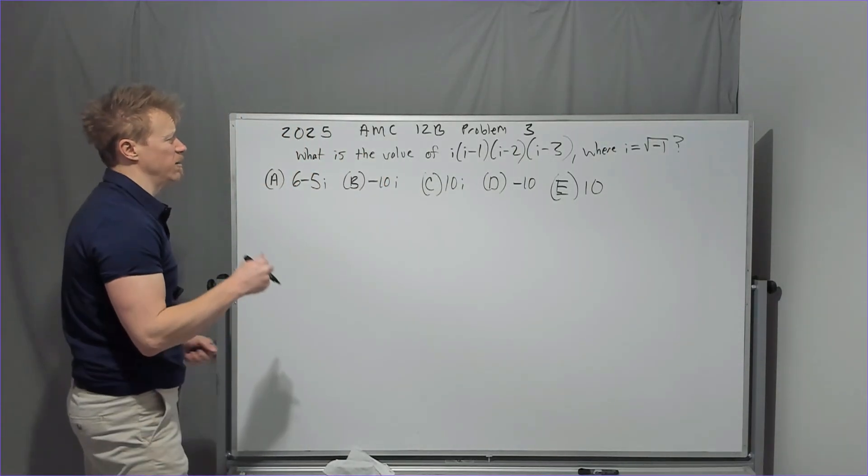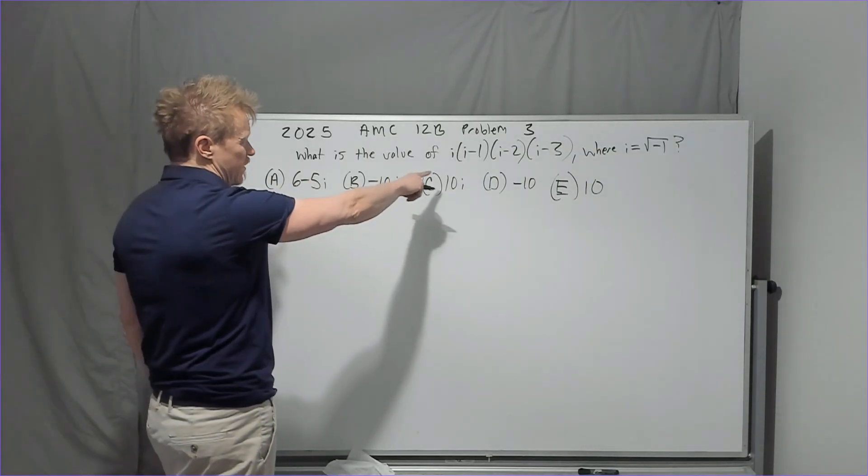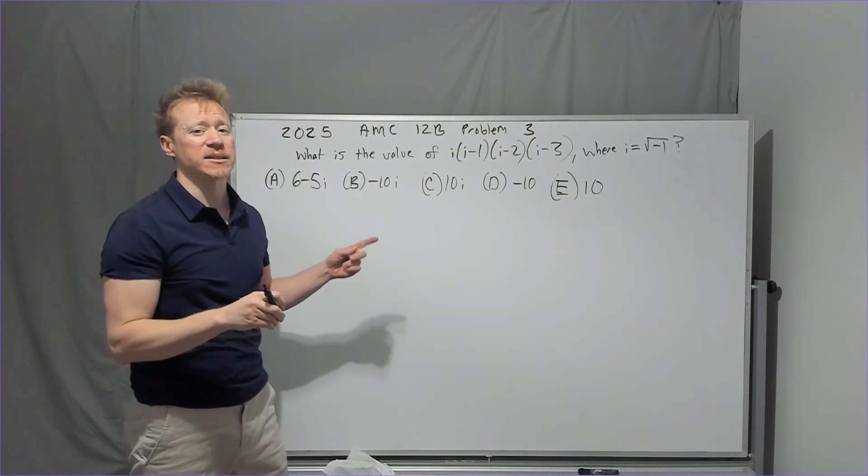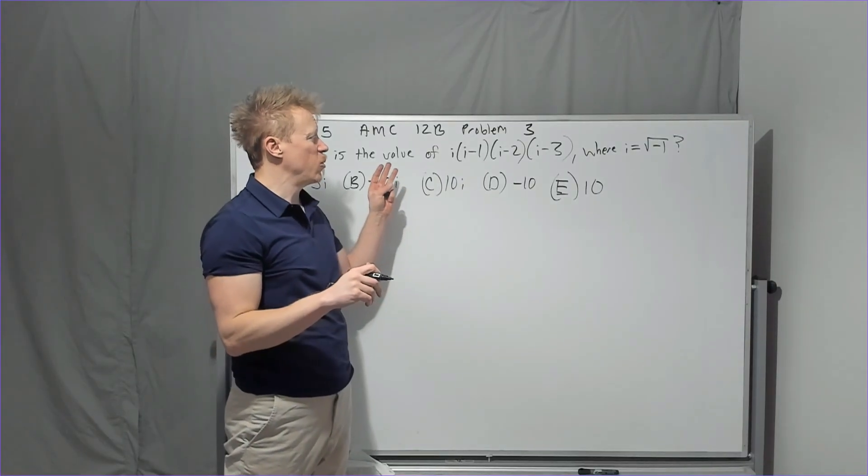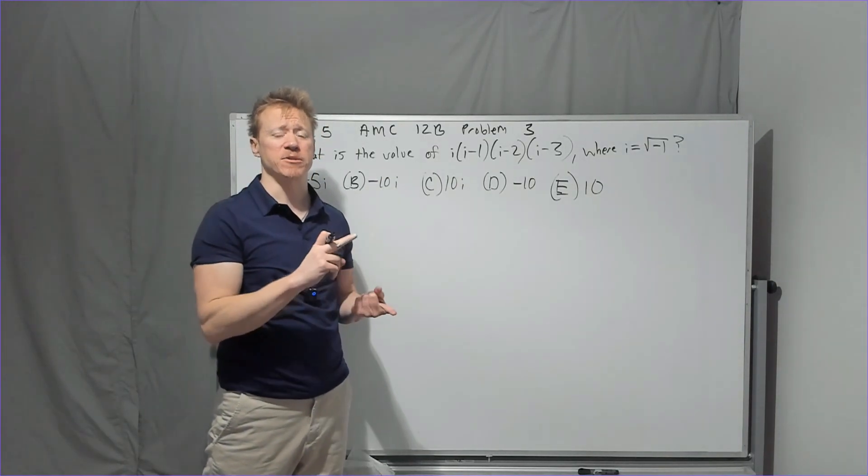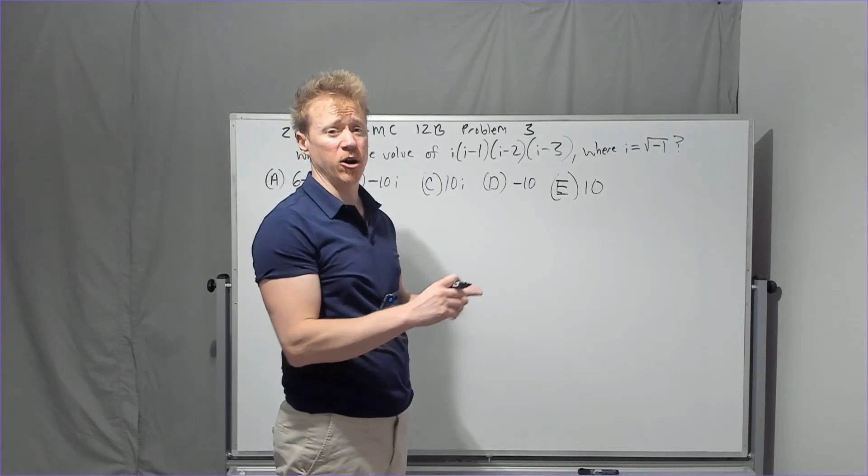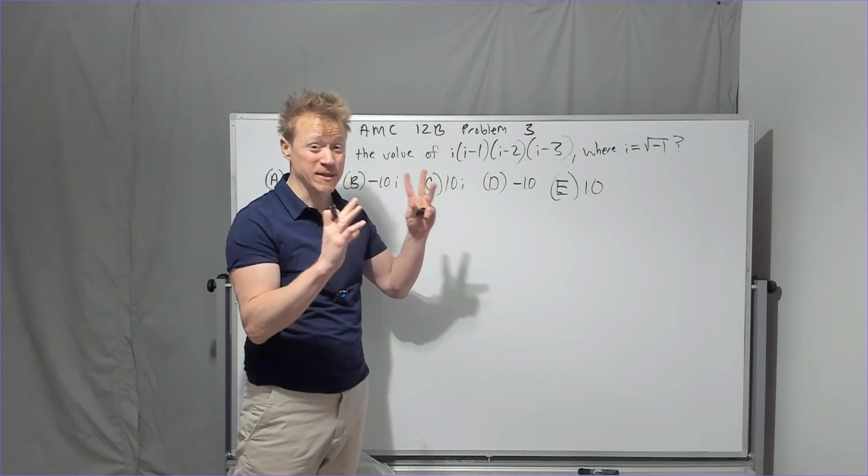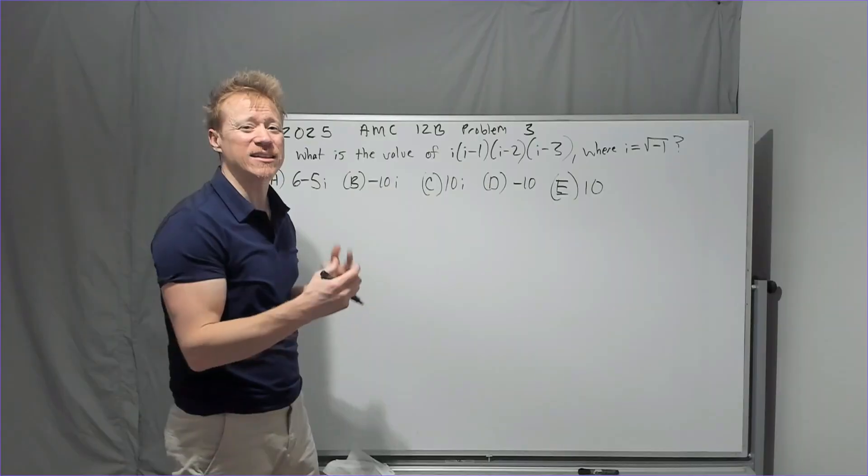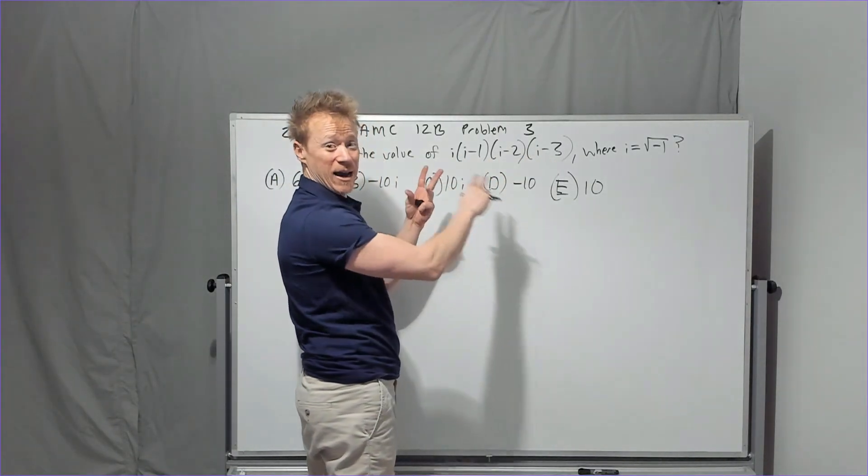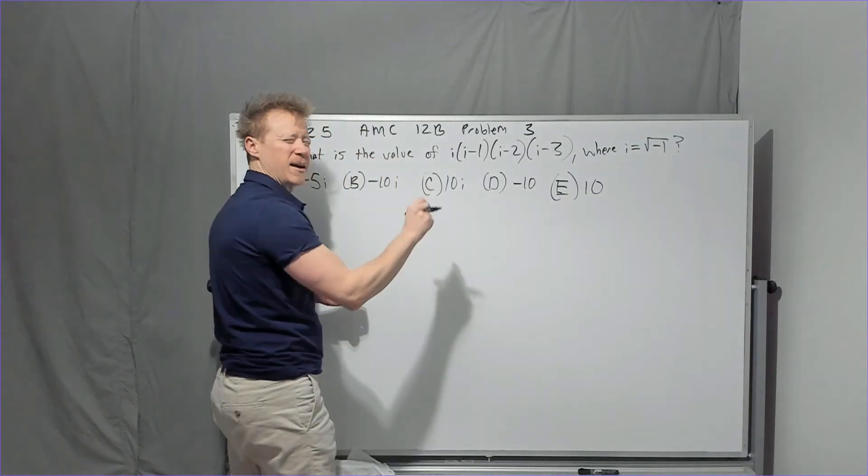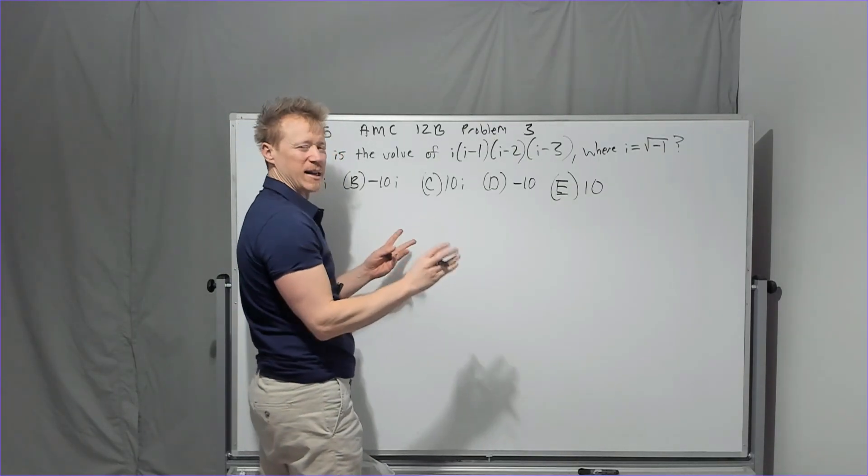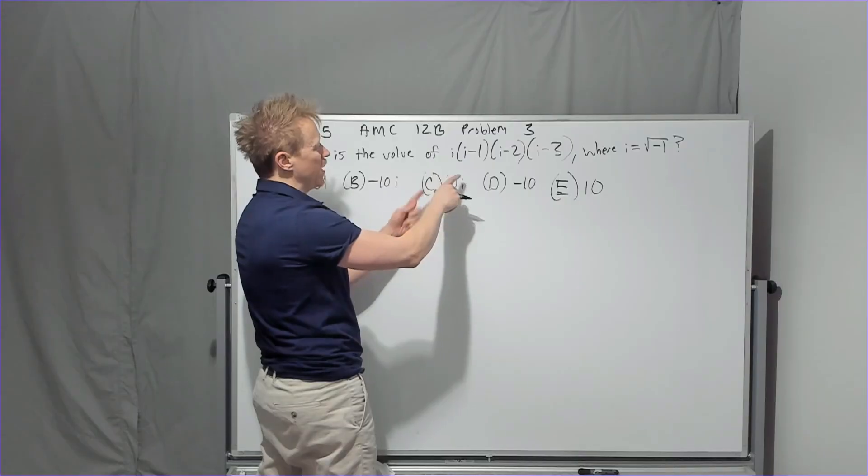Continuing on now at the 2025 12B problem three, what is the value of this expression where i is the square root of negative one? Again, if you had my small notebook class, we did go through and some of them, I think all of them, we went through binomial expansion from chapter 14 of intro to counting and probability. We went over just that one part. And I talked about how in binomial expansion that you can adapt that concept to other things like this.